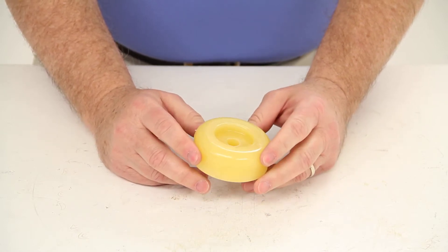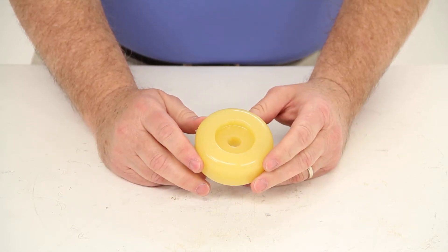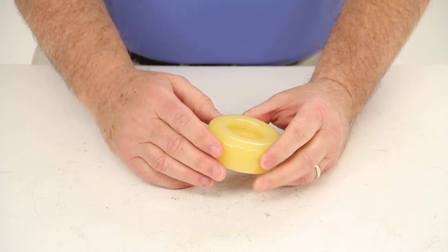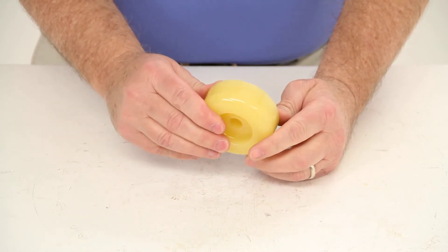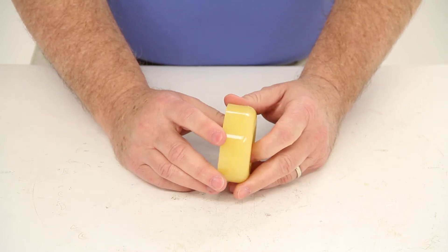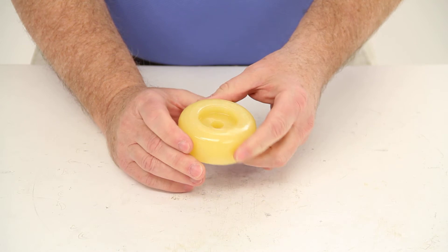This part is constructed of a TPR material, which is thermoplastic rubber material. It is a non-marking, non-scratching material. It is stronger and more durable than your traditional rubber material, and it is softer and more pliable than a polyurethane material.